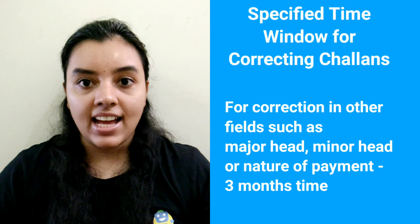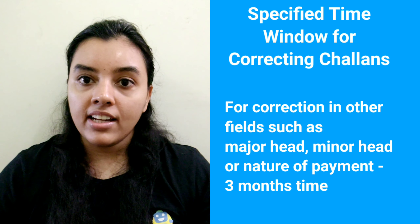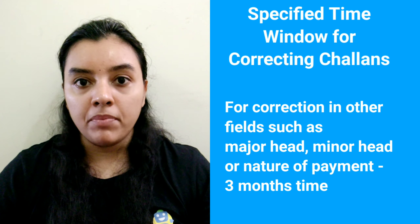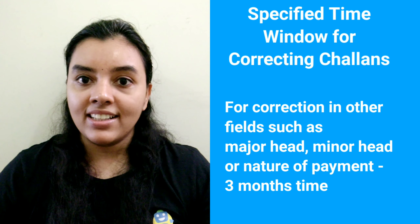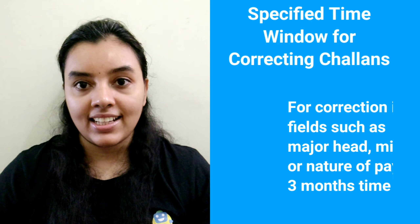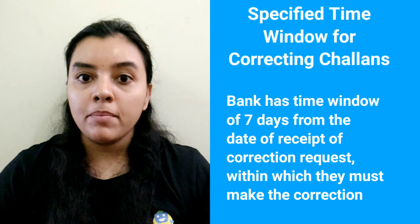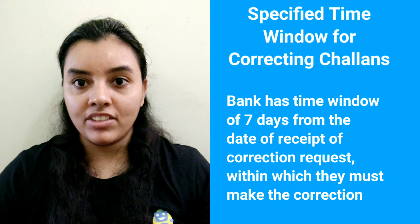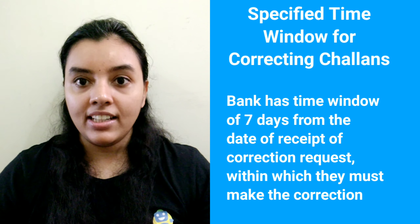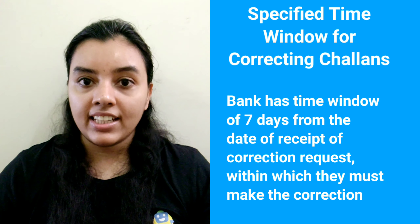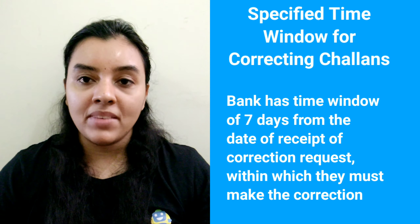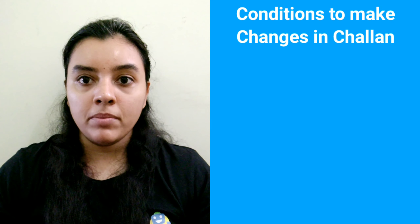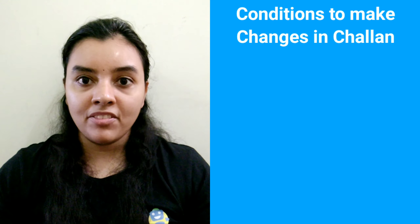Any other field such as major head, minor head, or nature of payment has up to 3 months within which a taxpayer can choose to rectify his mistake. Similarly, the bank also has a time window of 7 days, calculated from the date of receipt of the correction request, within which they must make the correction.